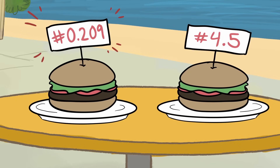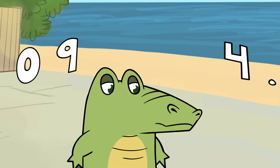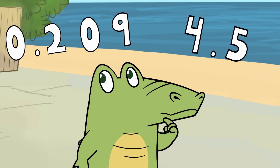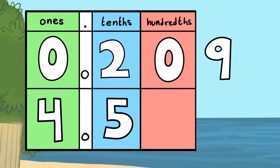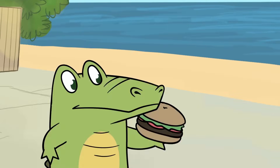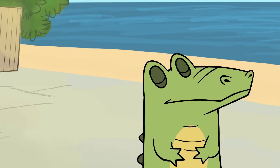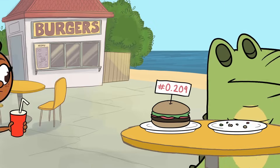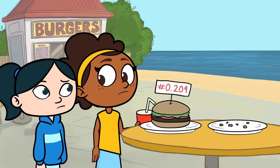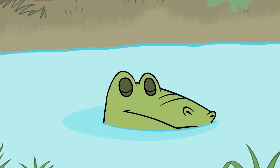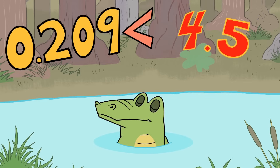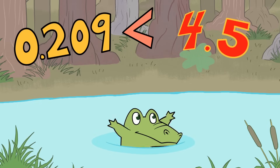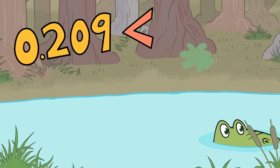209,000ths and 4 and 5 tenths. The greater is the one with the greater contents. He looks at the place values from left to right, finds the greatest one's place, so he takes a big bite. The hungry alligator eats the value that is greater; the value that is least is never part of his feast.